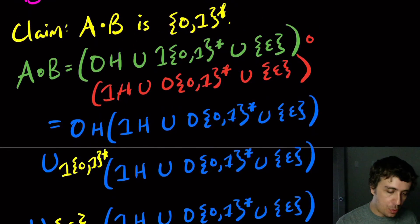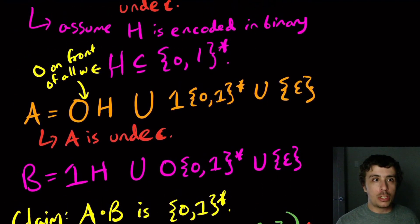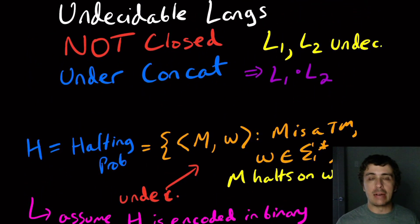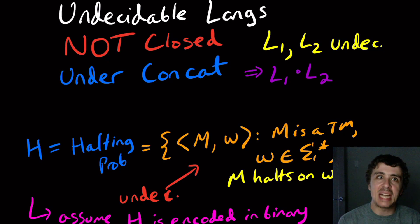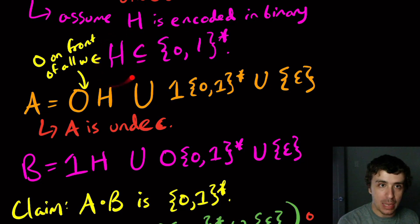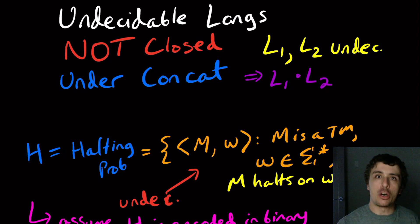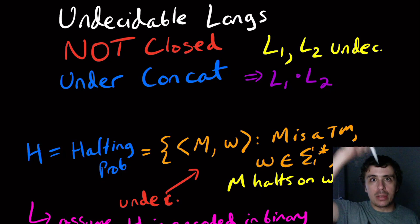So that was a quick proof that undecidable languages are not closed under concatenation. You can get similar results for star and other operations. One thing to note is that this applies to all undecidable languages — not recognizable or decidable — so if you consider the class of all undecidable languages, it is not closed under concatenation. Hopefully that was interesting. Leave thoughts about undecidable languages in the comments below, and please like the video and subscribe to the channel. Thanks for watching and I'll see you next time.